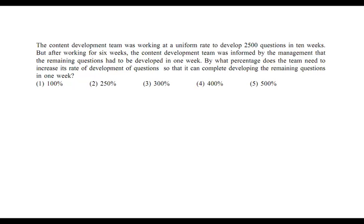That means speed has to be four times. 40% work, 10% time, so speed has to be four times. Four times means 400% should be the speed. So increase in speed will be 300%. Speed will be four times, that means 400%, but increase will be 400 minus 100, 300%.